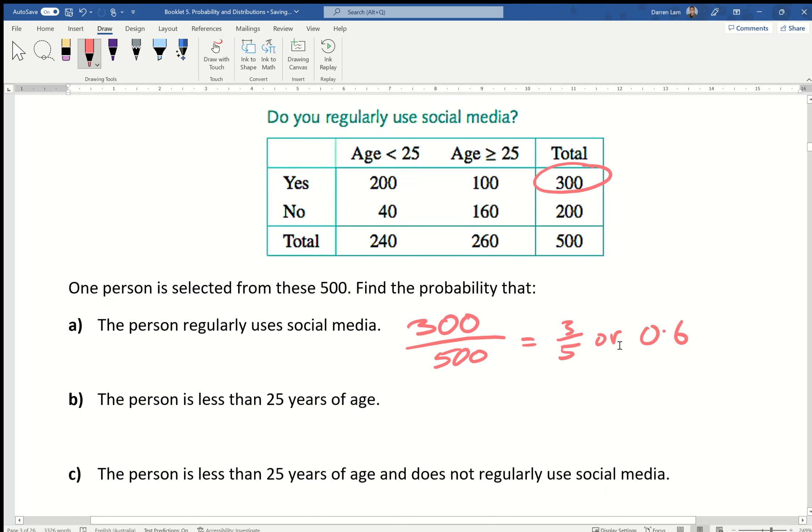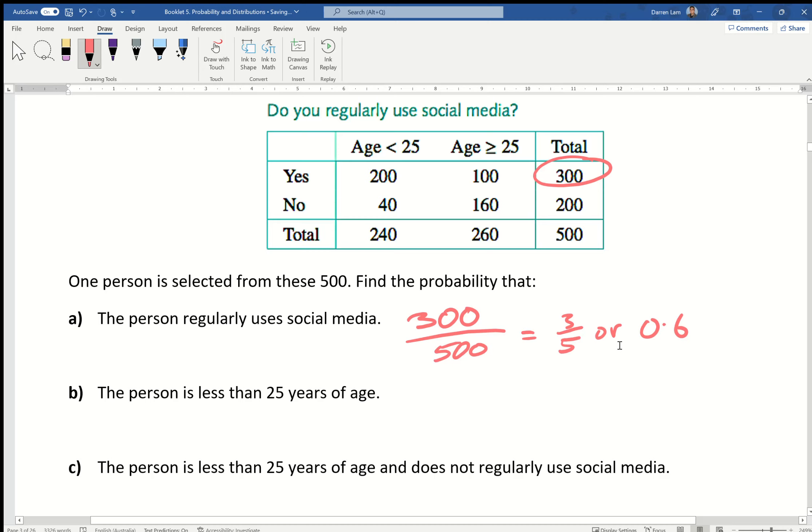The person is less than 25 years of age. Same situation: less than 25, I'm going to focus on this number, 240. So we end up with 240 over 500, equals 24 over 50, which is the same as 12 over 25, or we can convert to 0.48.